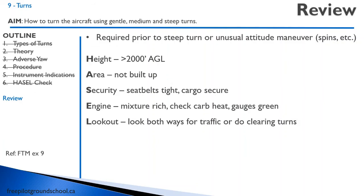Let's review. The most important item is the HASEL check: Height above 2,000 feet, Area not built up, Security with seat belts and cargo secure, Engine checked, and Lookout — look out for traffic and perhaps do a clearing turn. That concludes this lesson on turns. Thanks for joining me; we'll see you in our next lesson.